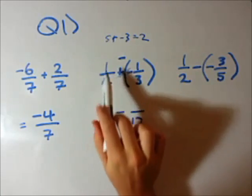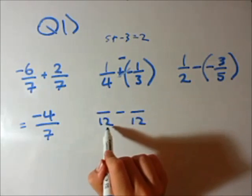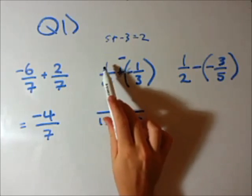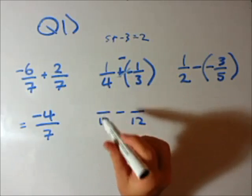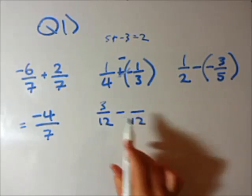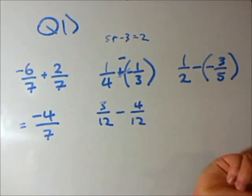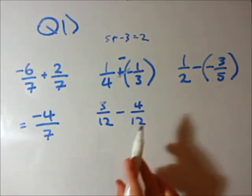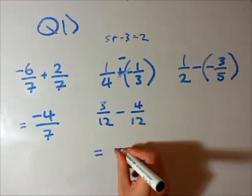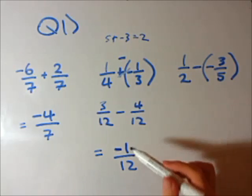So we write 12 as our denominator and it's just one big minus sign. To get from 4 to 12 we times by 3, so we times the top by 3 — that fraction becomes 3 over 12. To get from 3 to 12 we times by 4, so we times the top by 4. Now we can do the top: 3 minus 4 is negative 1 over 12. And that's obviously its lowest form because the top is 1.